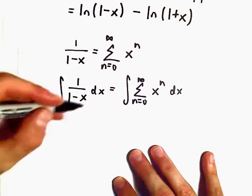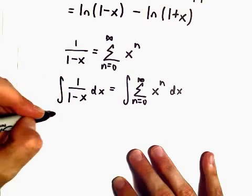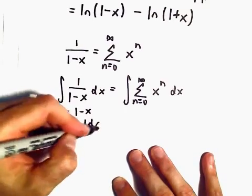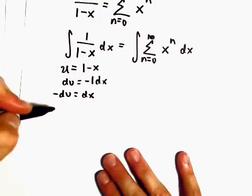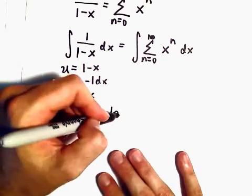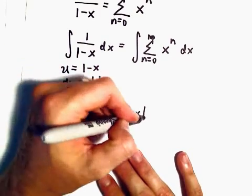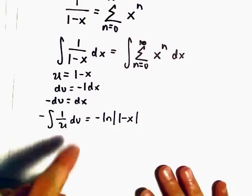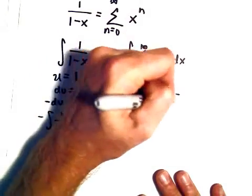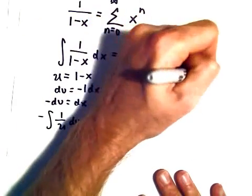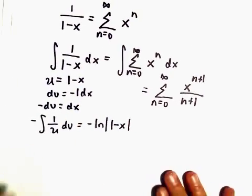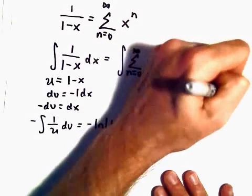If we integrate 1 over (1 minus x) we can just do a u-substitution. We let u equal 1 minus x, so du is going to be negative 1 dx, meaning negative du equals dx. So really we're integrating negative 1 over u du. That gives us negative the natural logarithm of u, but u is 1 minus x. When we integrate the right side, we get the series n equals 0 to infinity of x to the n plus 1 over n plus 1, and we have to add a plus C.